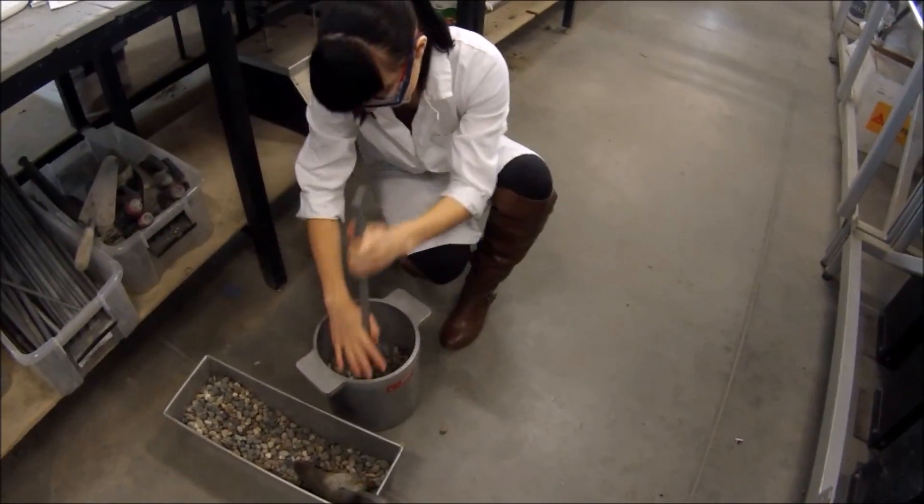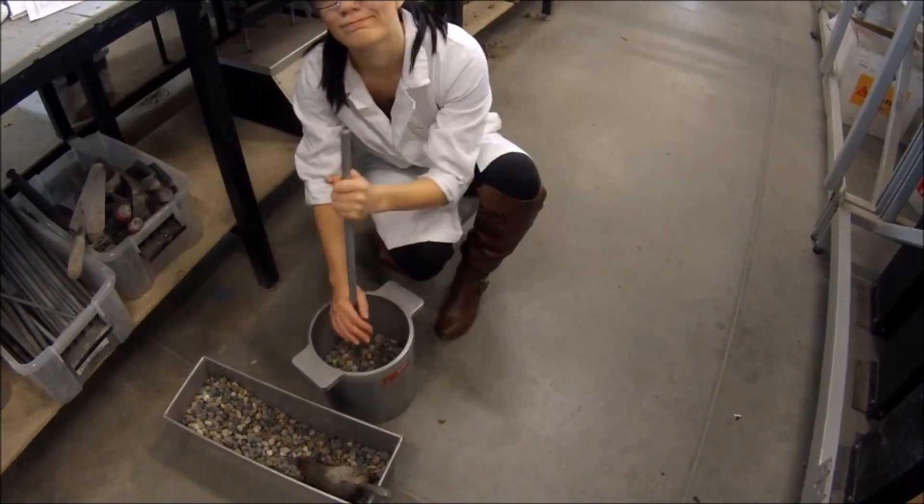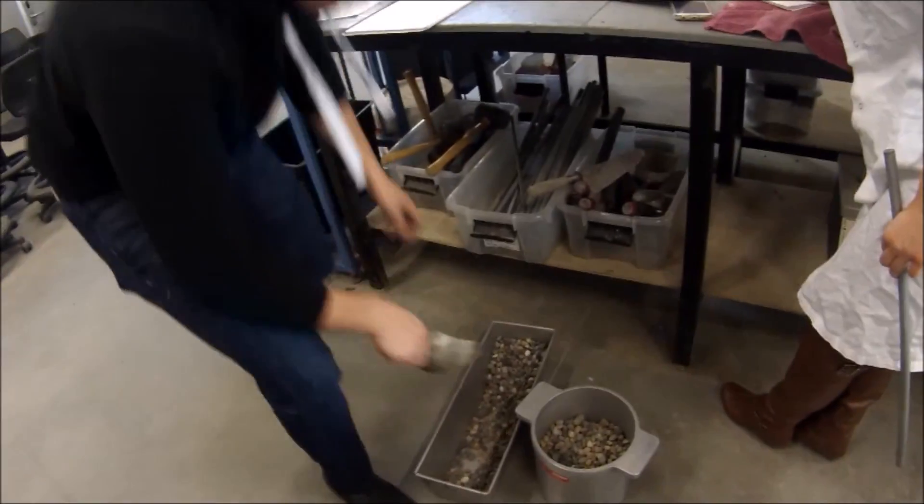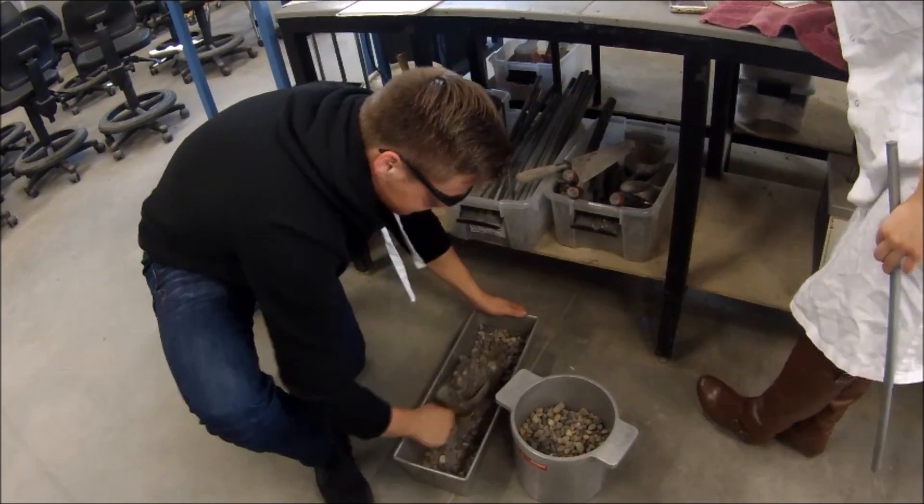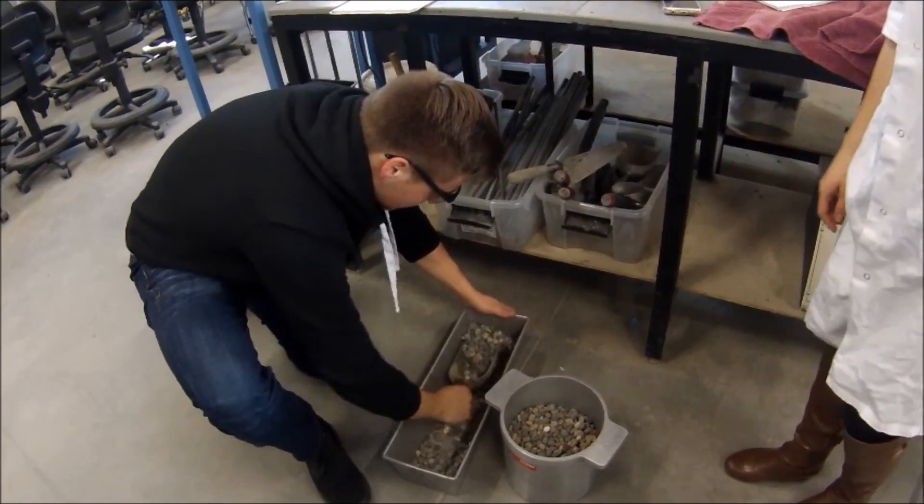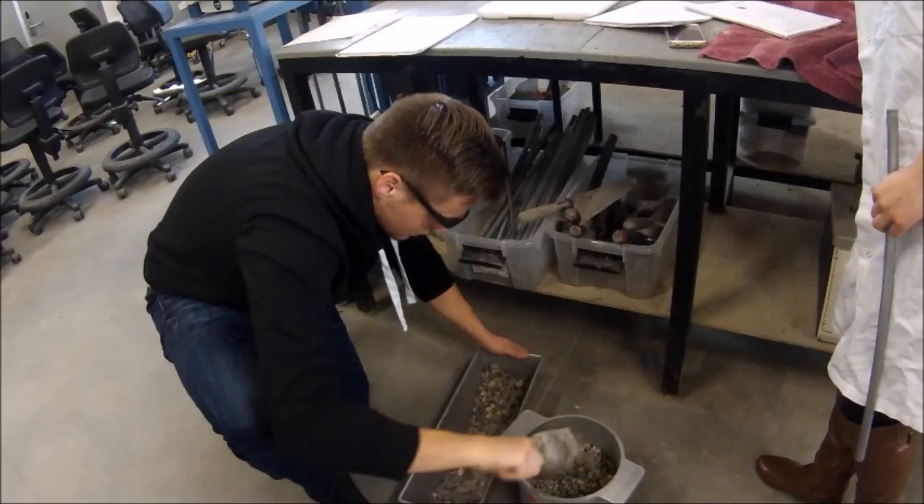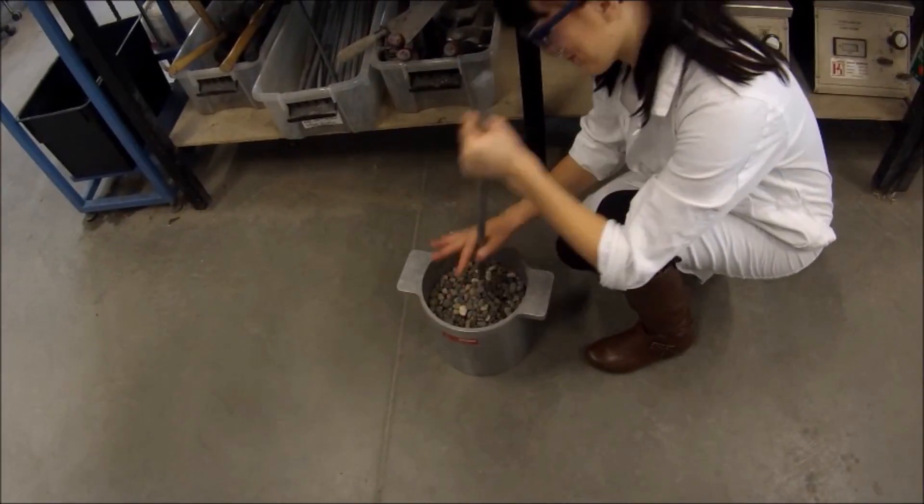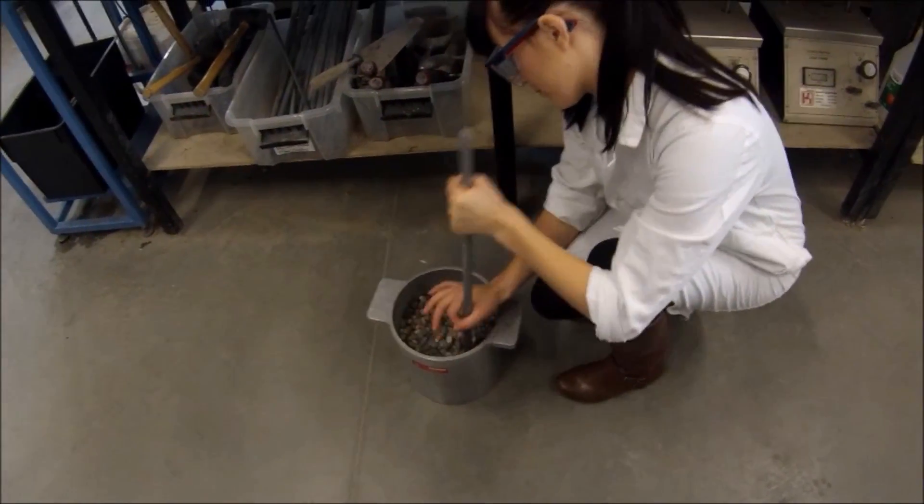Using the rod, tamp the first layer of the aggregate 25 times evenly over the surface. Add another layer of aggregate to bring the volume of the measure up to two-thirds full. Level with your fingers and tamp again 25 times with the rod.